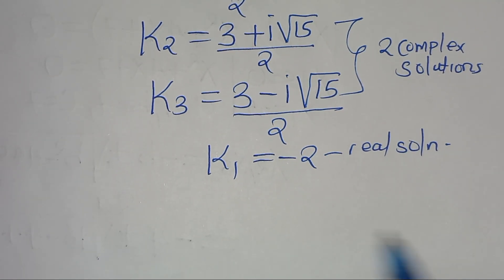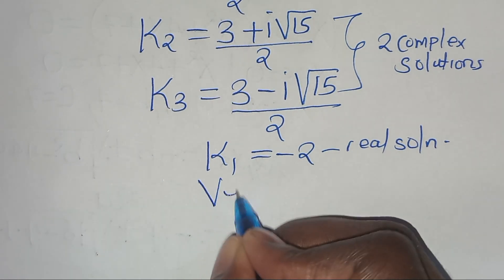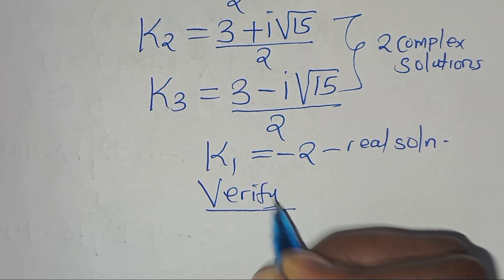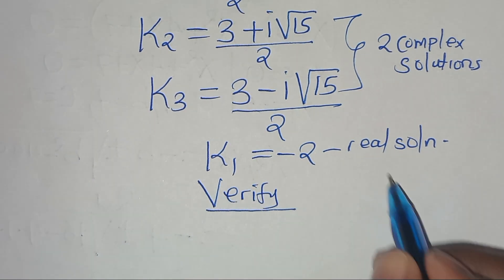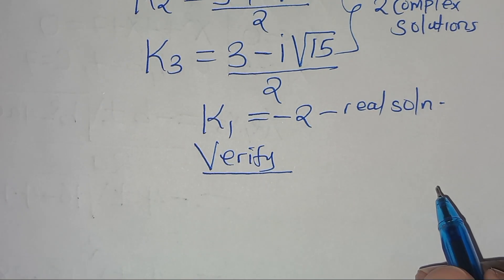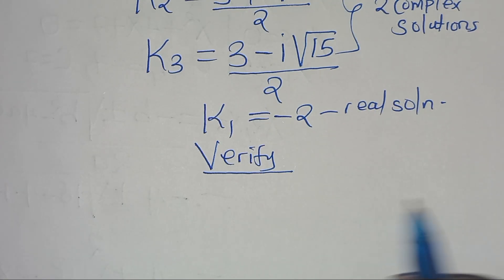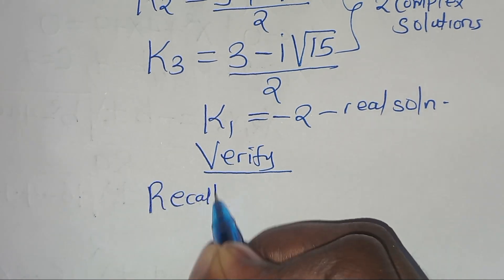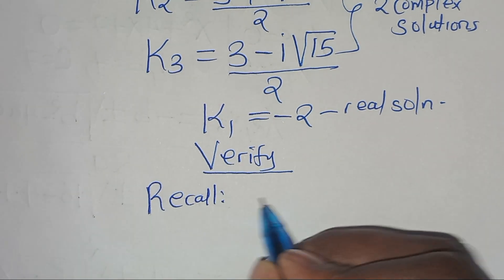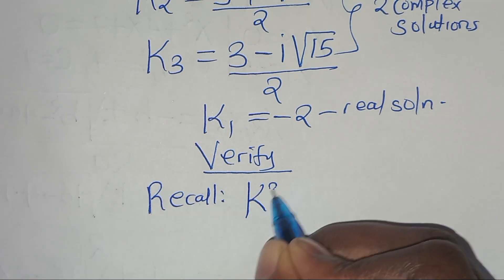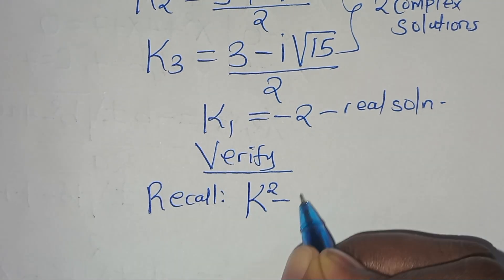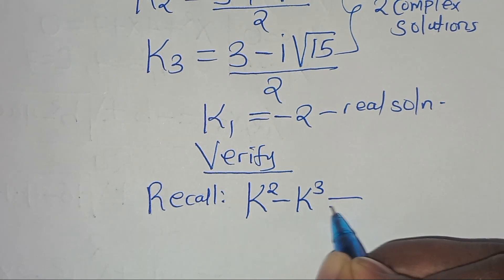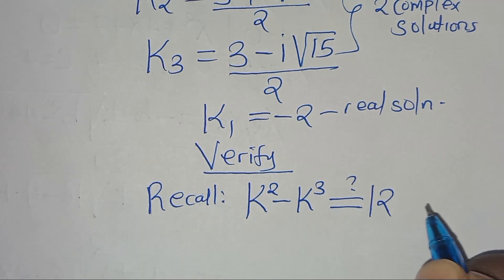The next step is to verify that the real solution satisfies the original equation. Recall that k squared minus k to the power of 3 should give us a value of 12.